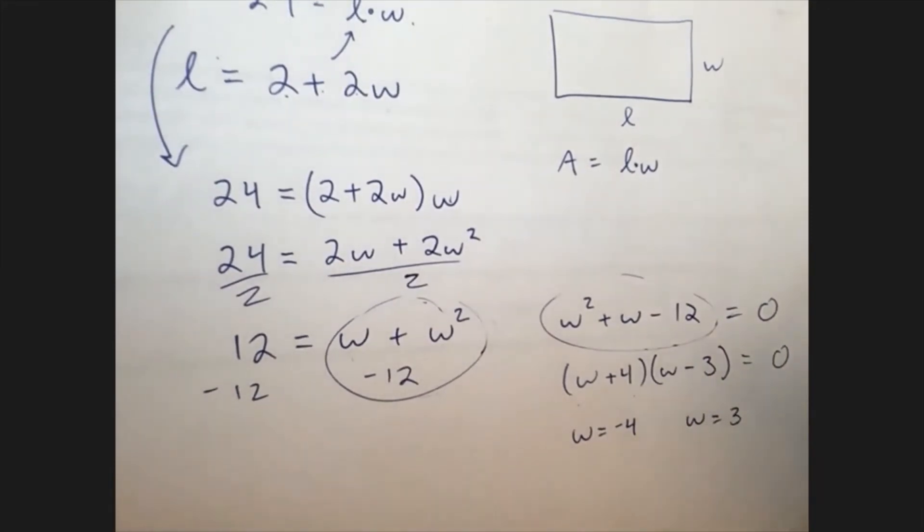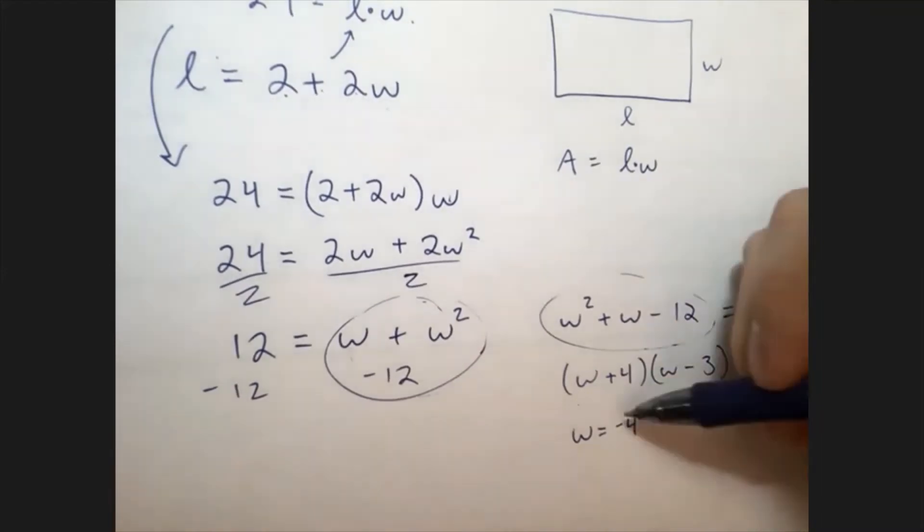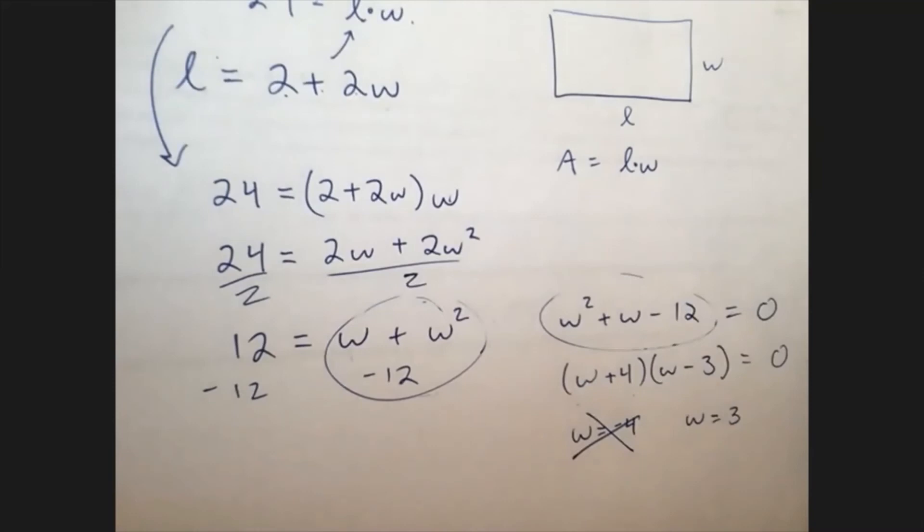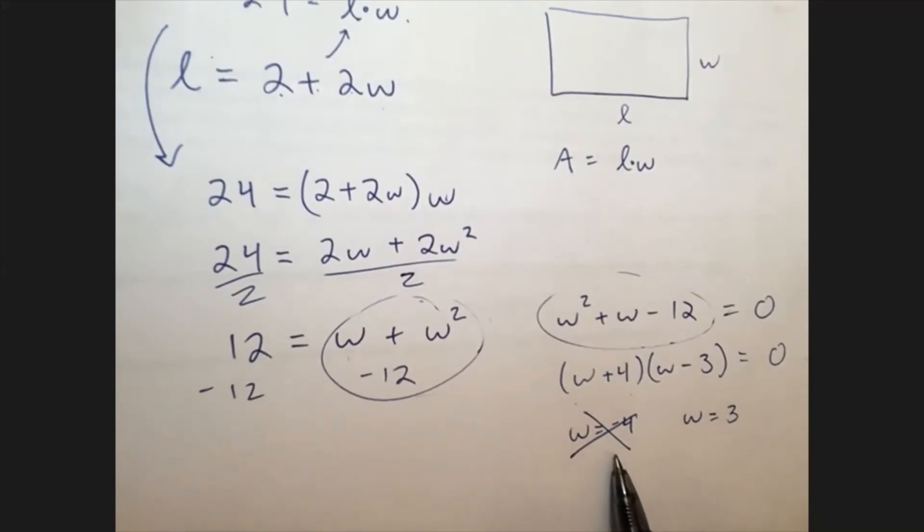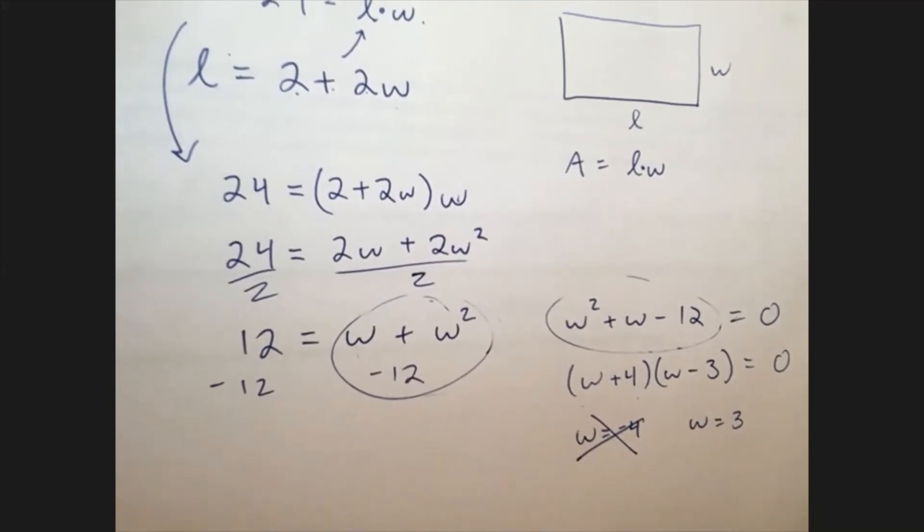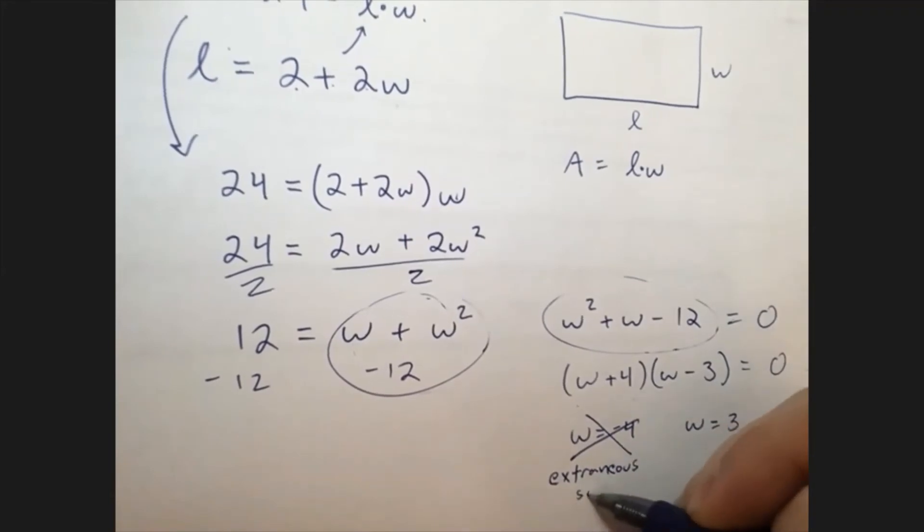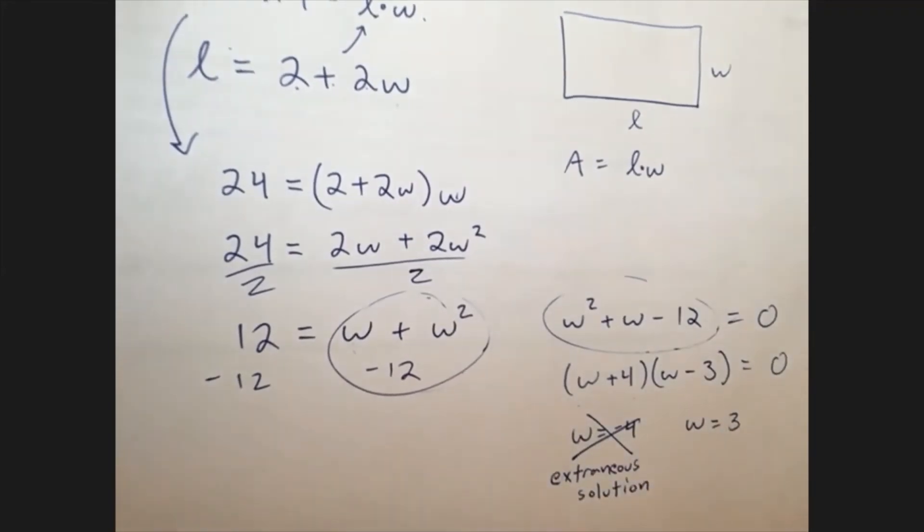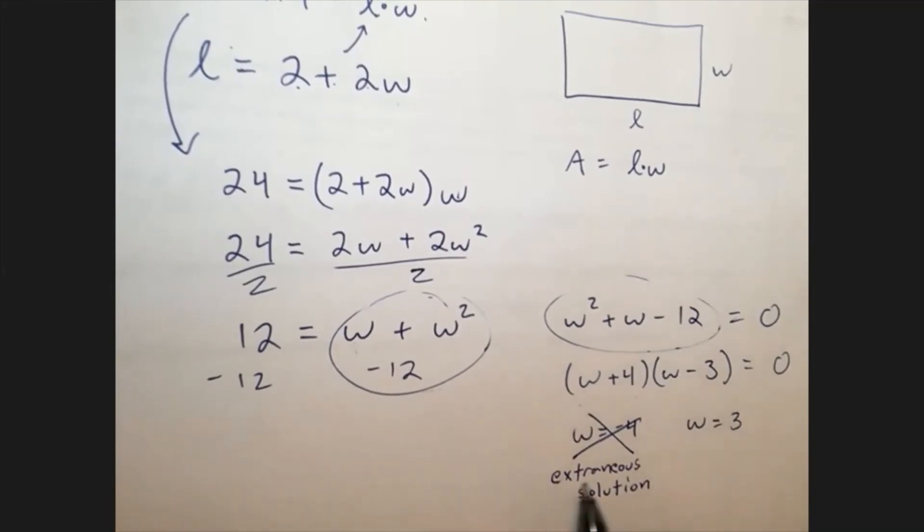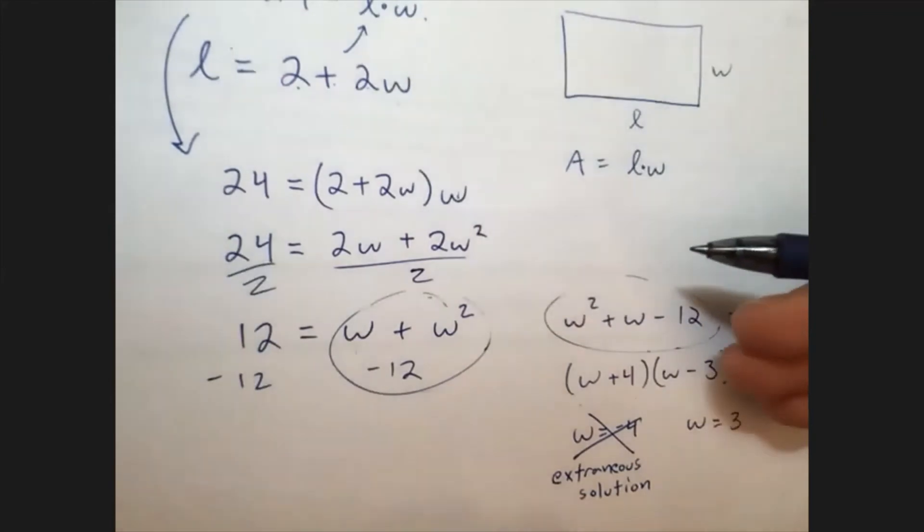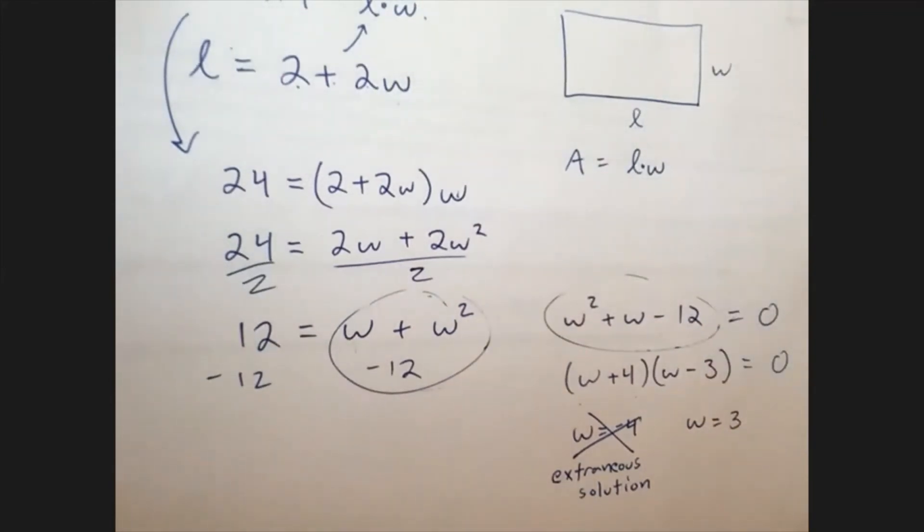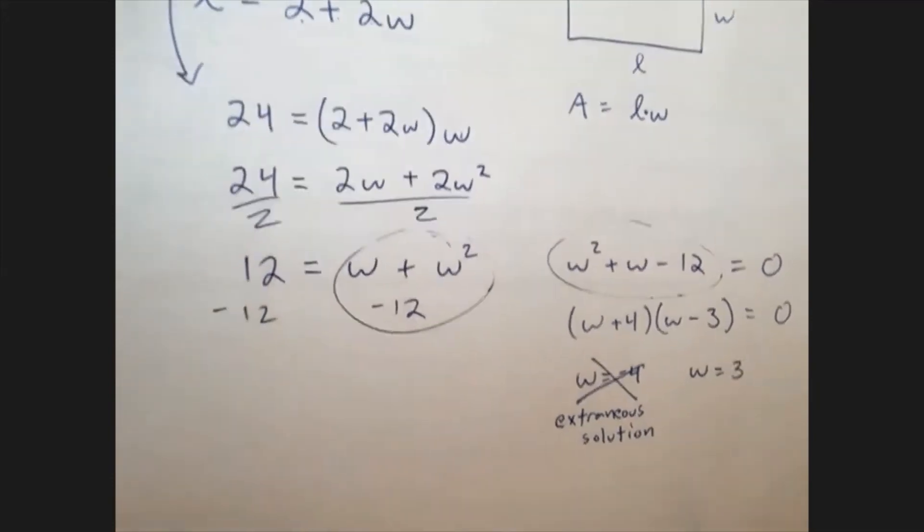Now, because this is a word problem, it reflects a real-life situation. I mean, I should ask myself, which of these makes sense? Well, this is the width of a rectangle, right? So it can't be negative because this is a real-world problem, and W represents widths. It can't be negative, so I exclude this. This is called an erroneous solution or extraneous solution, sometimes they call it. Extraneous. Extraneous means extra, right? Extraneous comes from the mathematics, but it doesn't really have to do with the problem. It doesn't have to do with the actual solution, so we ignore it. So we know that W equals 3.